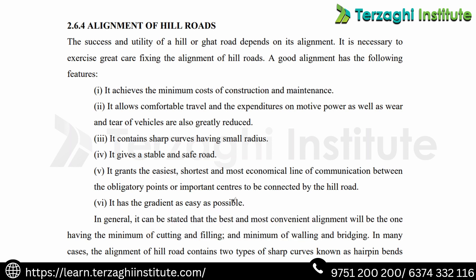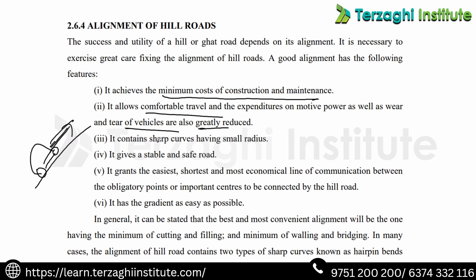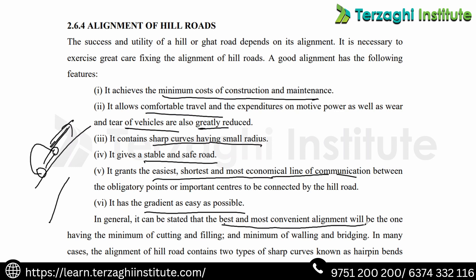Alignment of hill roads — good alignment has several features. Minimum cost of construction and maintenance. Comfortable travel. Motive power — since we have hills, we need to reduce push power and wear and tear of vehicles. Hill roads contain sharp curves with small radius, hairpin bends, and hairpin curves. Stable and safe road — the easiest, shortest, most economical line of communication. Gradient should be as easy as possible — very steep gradients cause discomfort. Best and most convenient alignment means minimum cutting and filling and minimum of walling and bridging.